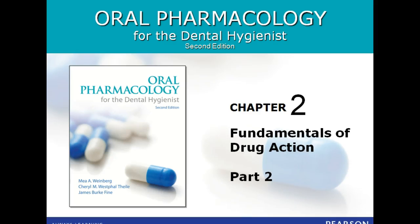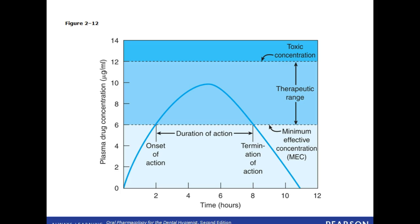This is Pharmacology Chapter 2, Part 2. This graph shows the oral administration of a single-dose drug. The time of onset is 2 hours, and the end of drug action is 8 hours. This means that the drug has a duration of action of 6 hours. The plasma half-life is about 4 hours.